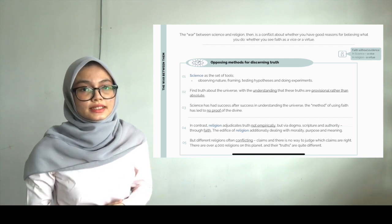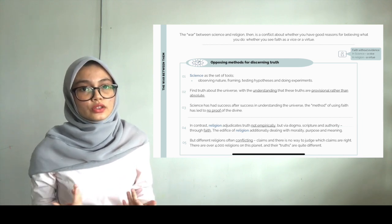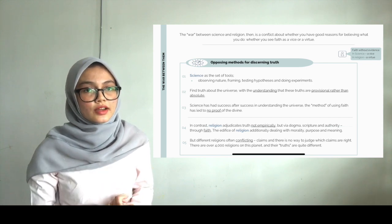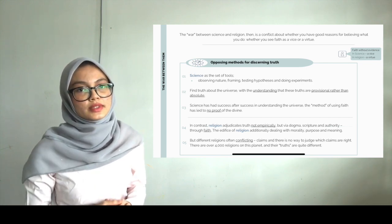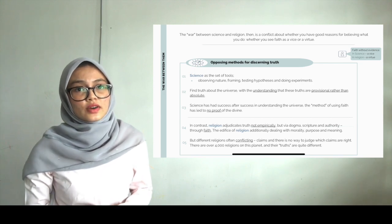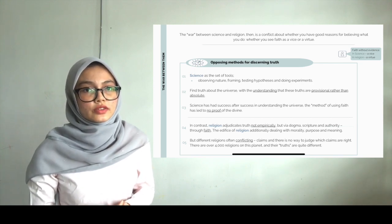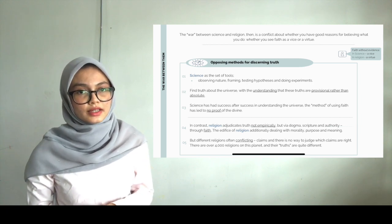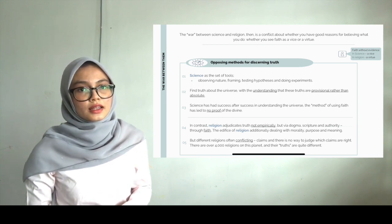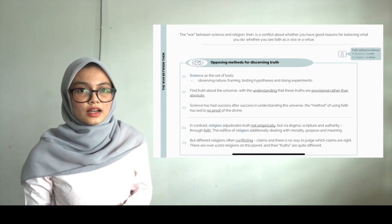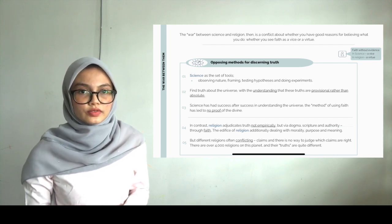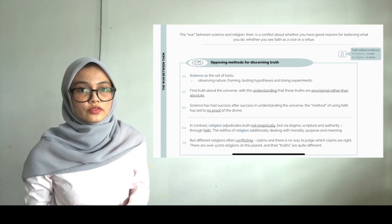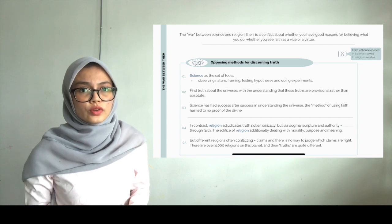Firstly, science is a set of tools. We all know that science needs observing nature, framing and testing hypotheses, and doing experiments. Second, science finds truth about the universe, with the understanding that these truths are provisional rather than absolute. Lastly, science has had success after success in understanding the universe. The method of using faith has led to no proof of the divine.